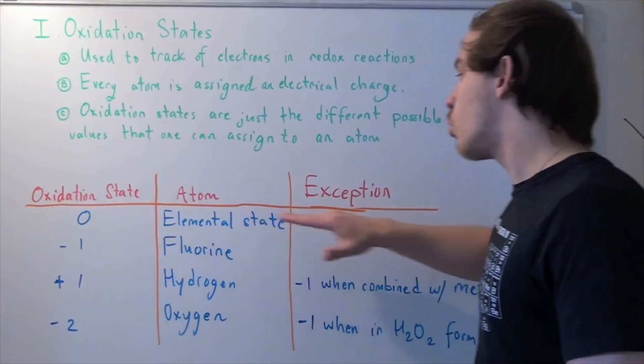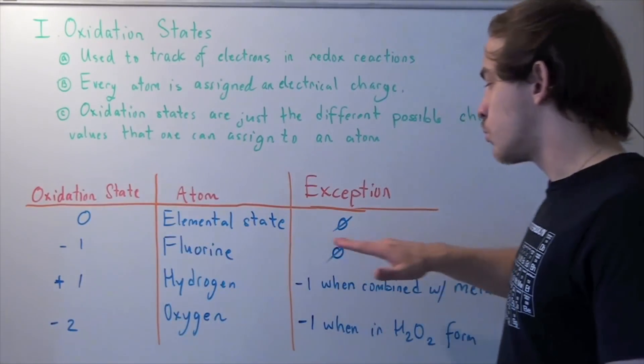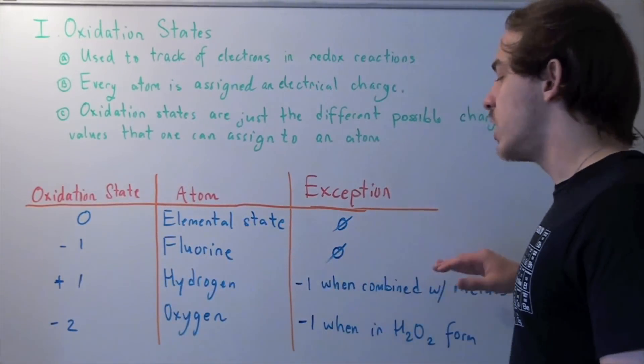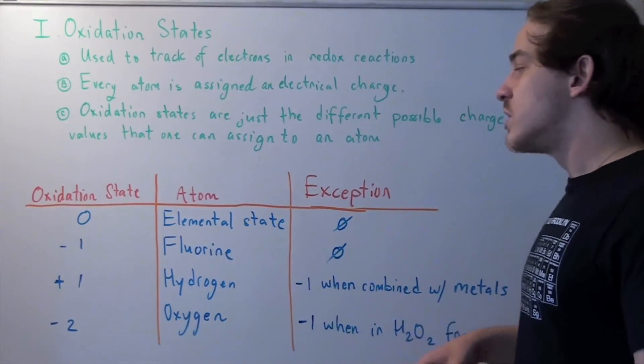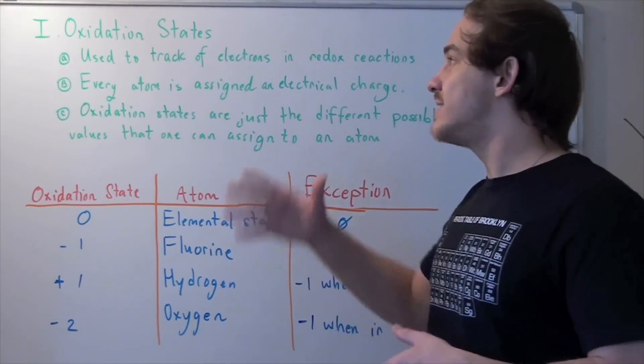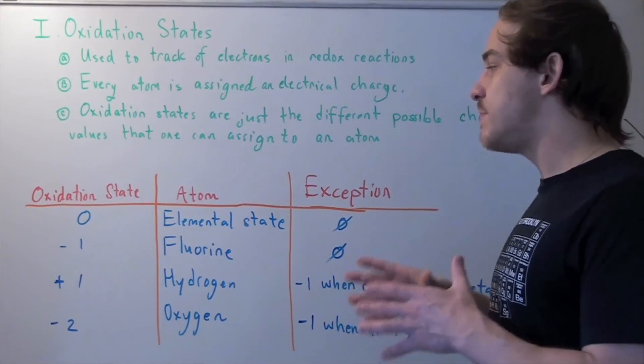For example, this is the most important rule, the second most important rule, third most important rule, and fourth most important rule. When you're assigning these oxidation numbers, you must keep that in mind.